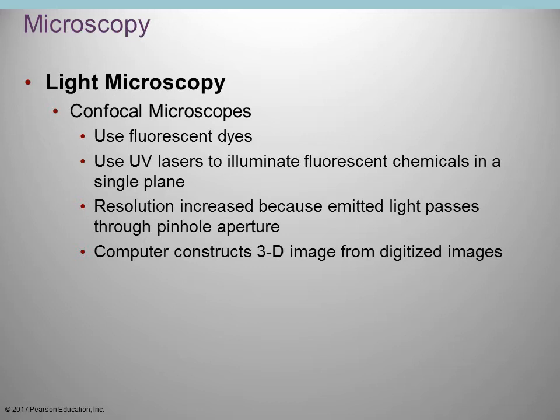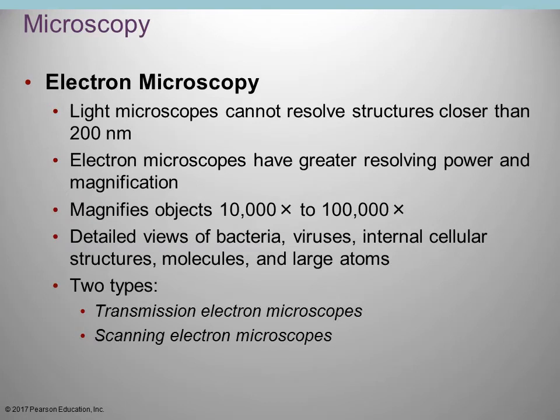Electron microscopes are able to achieve much higher magnification. You can see smaller things — smaller specimens such as viruses, internal cellular structures, molecules, and large atoms. There are two types: a transmission electron microscope and a scanning electron microscope.